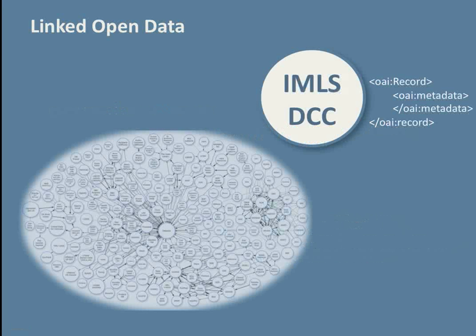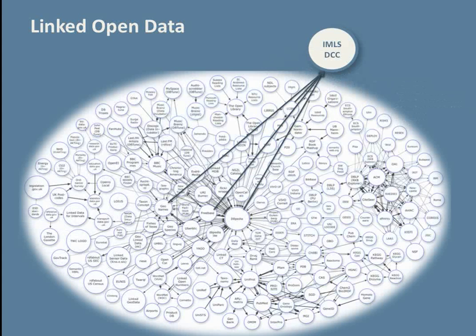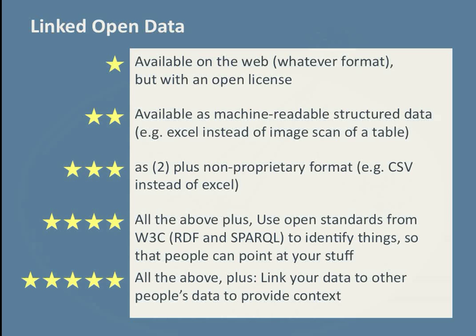Currently, many of the collections included in the IMLS Digital Collections and Content Project are disconnected from the larger linked open data community, even though many institutions share OAI records through the Open Archives Initiative protocol for metadata harvesting. As part of our sprint, we looked at the feasibility of integrating IMLS DCC and its partners into this larger world of linked data, in particular by looking at how we might reconcile some of our metadata with available linked data sources. I'm going to use the five criteria put forth by Tim Berners-Lee as a way to talk about the opportunities and challenges that we face.